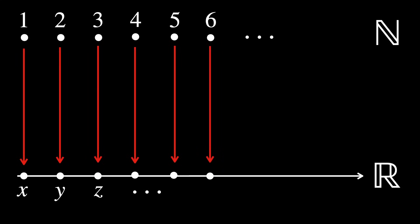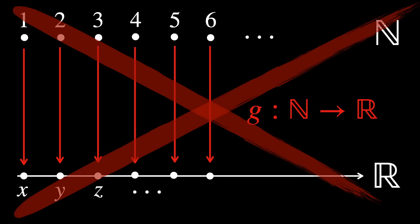Sets can be dense and countable at the same time. The real numbers, on the other hand, are not only dense but uncountable. Being uncountable is a stronger condition than being just dense. This means that you cannot imagine a function g that goes from the natural numbers to the real numbers that is one-to-one and onto.